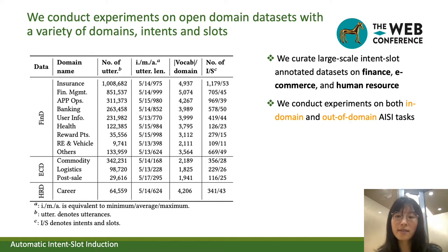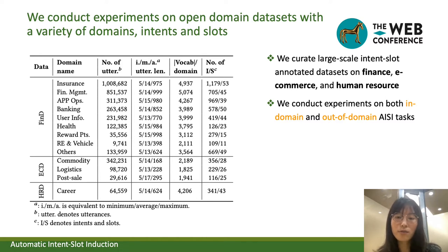Now we explain RECAP and the corresponding experiments. To conduct experiments, we curate large-scale intent-slot datasets on finance, e-commerce, and human resources. Here we show a table listing the statistical information of all three datasets. We can see that these datasets include a variety of intents, slots, and even subdomains. In practice, we conduct model training on the financial dataset, which is FinD, to illustrate the in-domain automatic intent-slot induction task. We also conduct experiments on the other two datasets to illustrate the out-of-domain task.